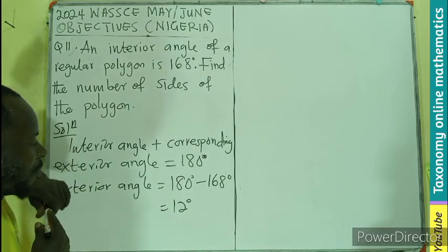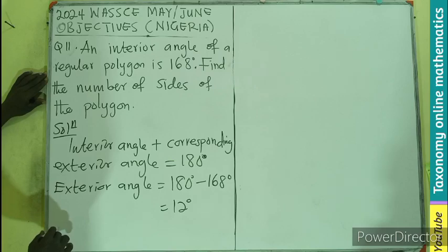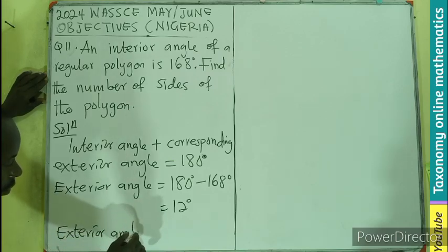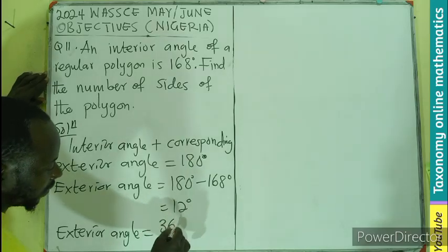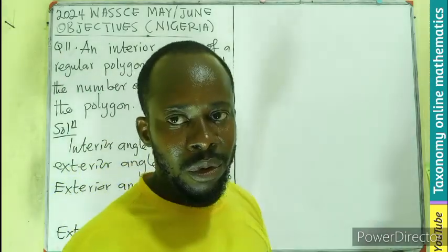But there is a formula for exterior angle in connection with the number of sides. We can say the exterior angle is equal to 360 degrees divided by n, if the polygon is regular.